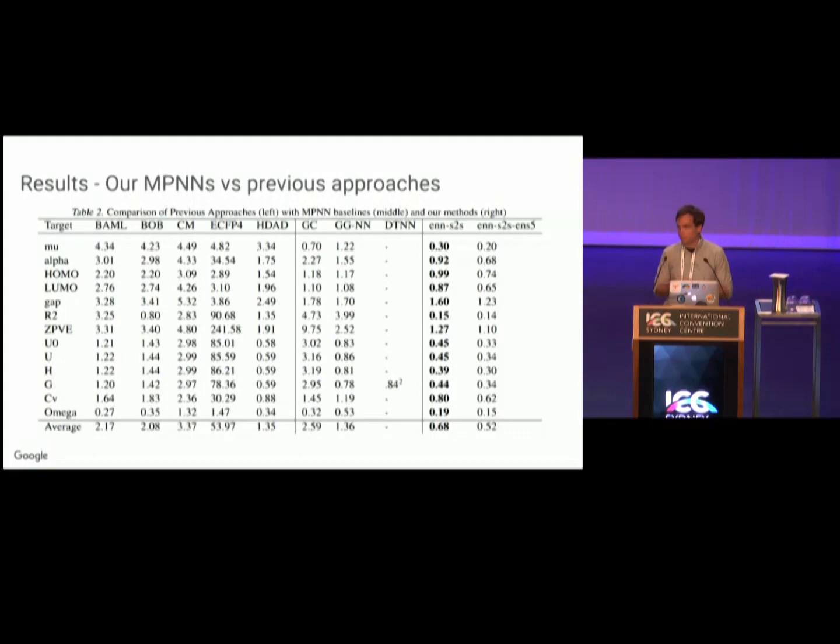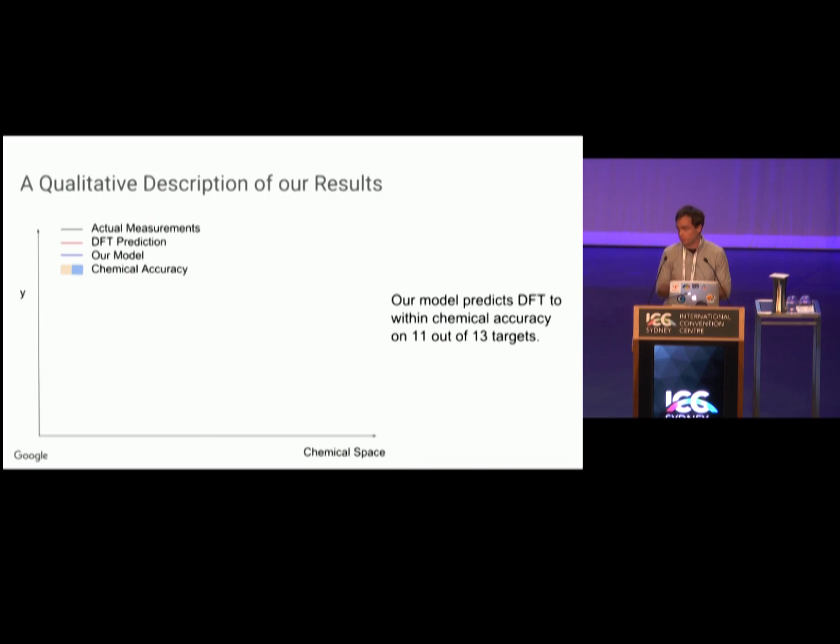The important thing about these numbers is any number that's less than one means that we're predicting that target to within chemical accuracy. We're basically predicting 11 out of 13 targets to within chemical accuracy. This is a qualitative description of that statement. Suppose this black line is the actual target if you did a very precise experiment in the lab to measure. Chemical accuracy is a gold standard in chemistry, roughly defined as proportional to the standard deviation of a really precise experiment.